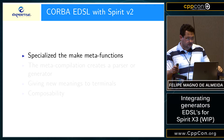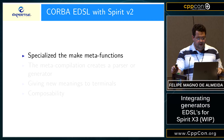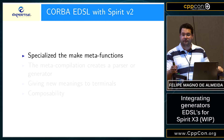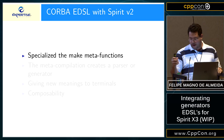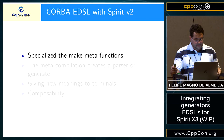When creating an EDSL on top of Boost Spirit V2 for CORBA, what we did was create another domain — one for parsing and another for generating with Karma. We then specialized the parser and generator that Spirit could later call as a parser, as a Boost.Chi parser, or as a Boost.Karma generator.